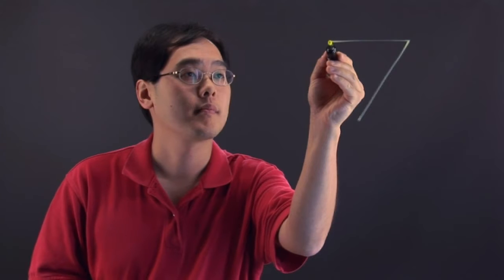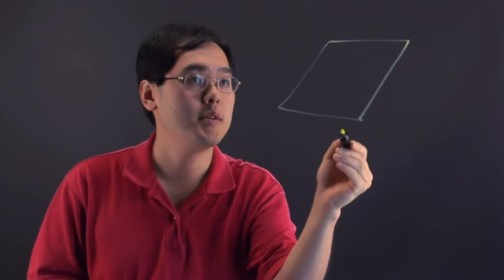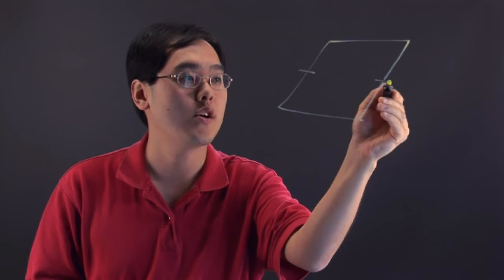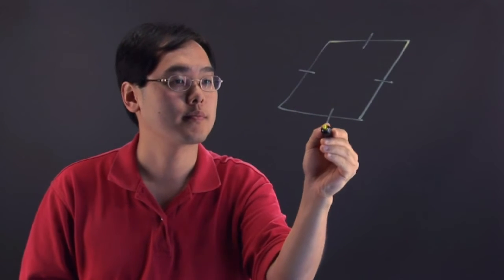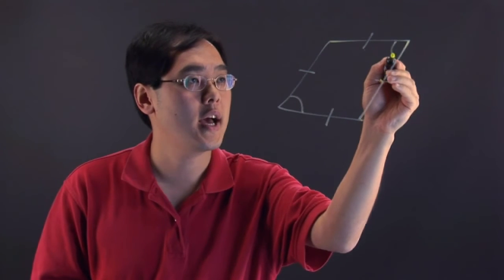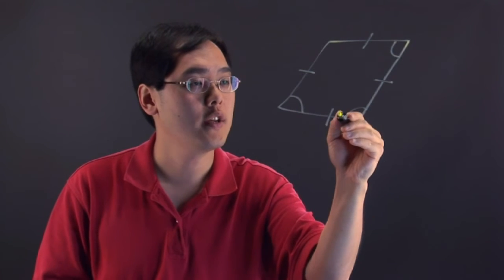So what we're going to do first, we're going to draw a rhombus, and then we'll look at if it fulfills the characteristics of a parallelogram. So a rhombus typically has the characteristics that all the sides are the same and its opposite angles are equal.